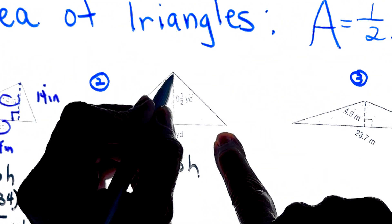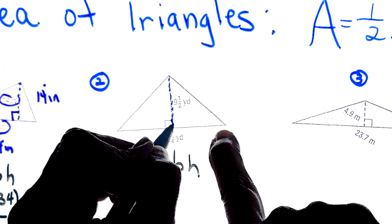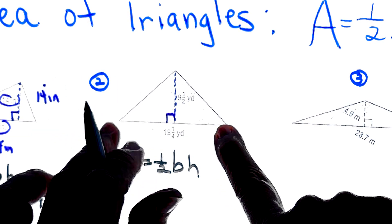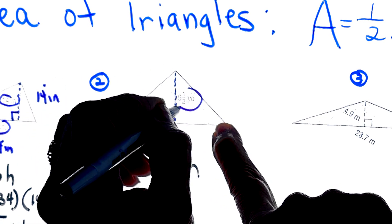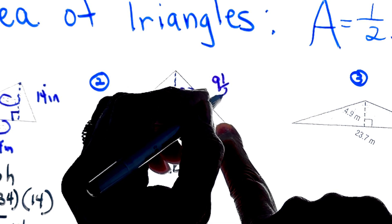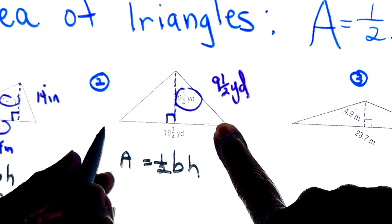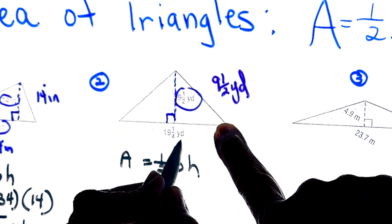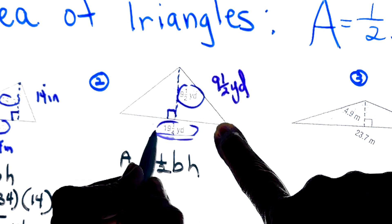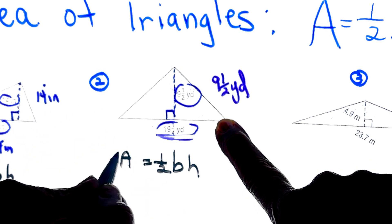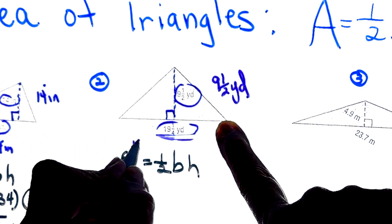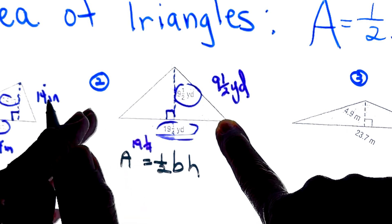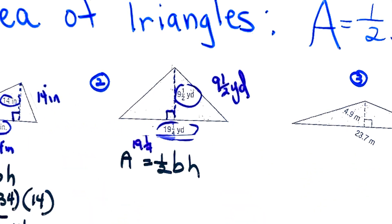Let's make sure that you can see everything here. I know that my height is right here. It hits the base at 90 degrees and that number is 9 and one-half yards. This is our base right here, and that base is 19 and one-fourth in case you could not see the black print.